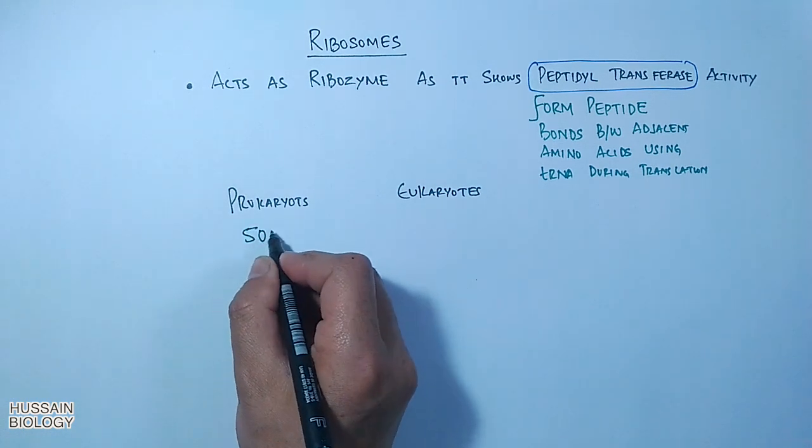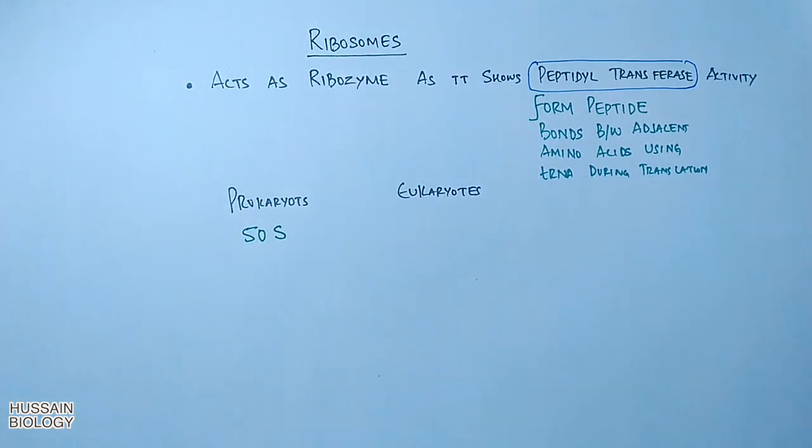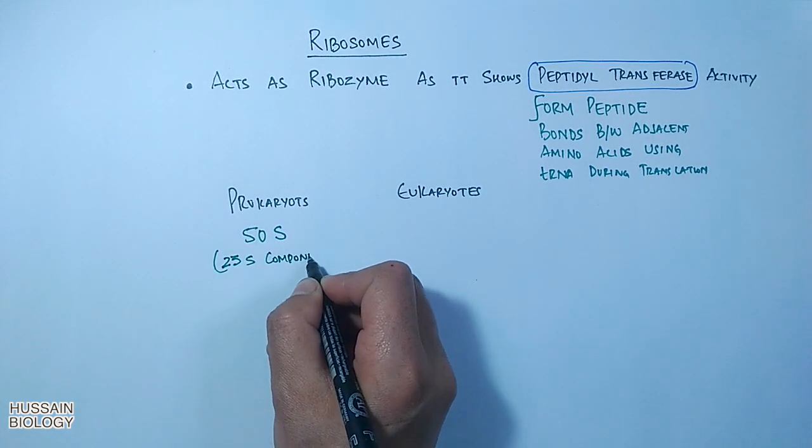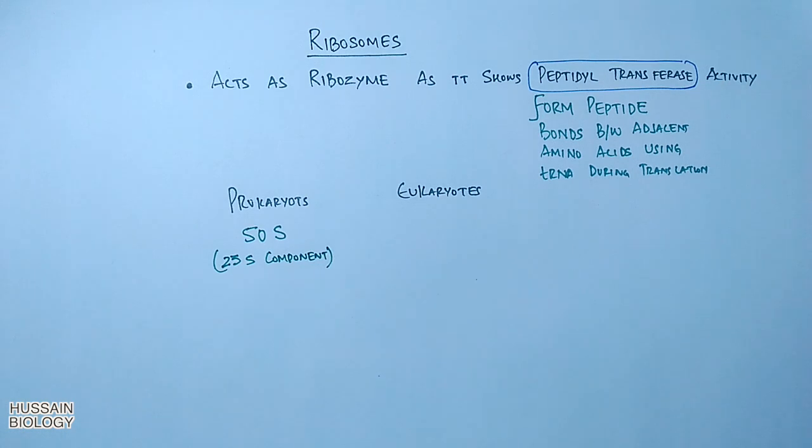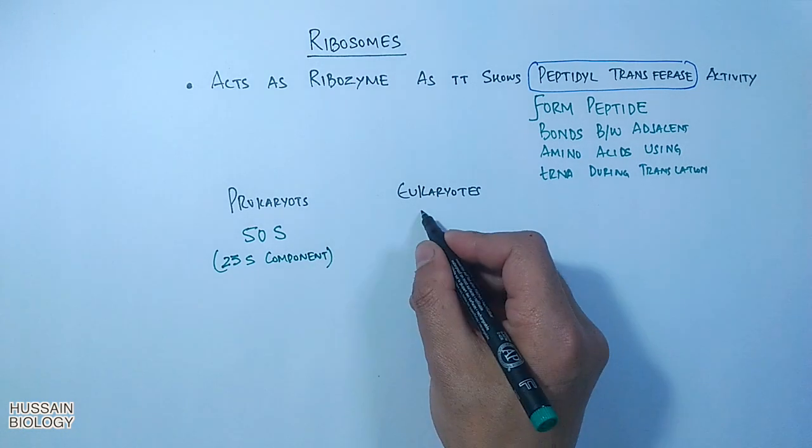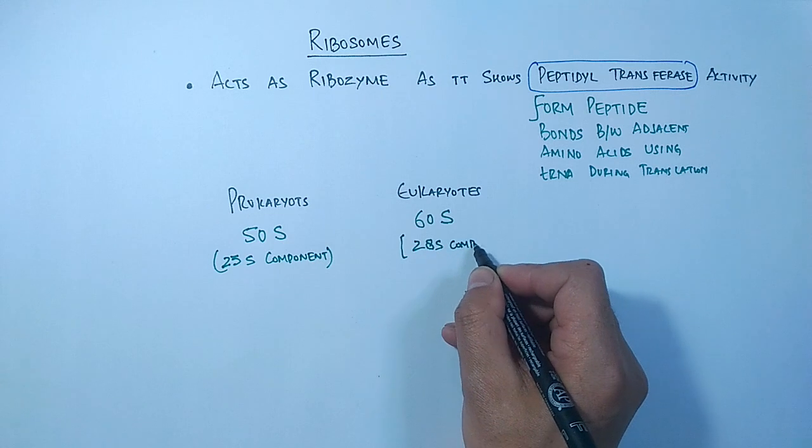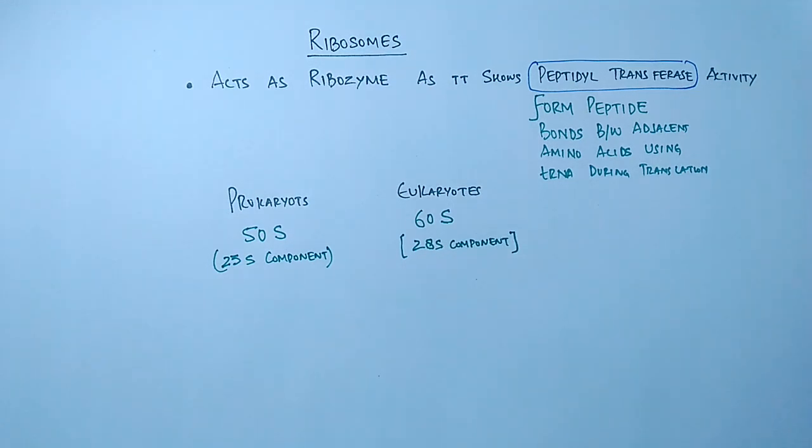Both in prokaryotes and in eukaryotes, the peptidyl transferase activity is shown by the larger subunit of ribosome. In prokaryotes we have 50S larger subunit of ribosome, in which 23S component shows the peptidyl transferase activity. Whereas in eukaryotes we have the 60S larger subunit, in which 28S component shows the peptidyl transferase activity.